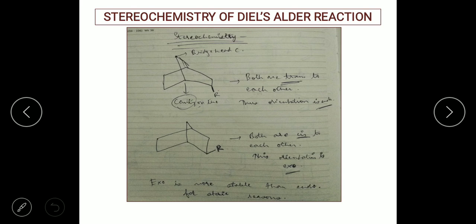Now coming to the stereochemistry for bridgehead carbons. For bridgehead carbons, the main concept we should understand is endo selectivity and exo selectivity. How do we define whether orientation is endo or exo? We always look at the cavity. If the R group, that is the substituent, is facing towards the cavity, then that orientation is called endo.